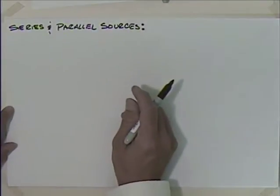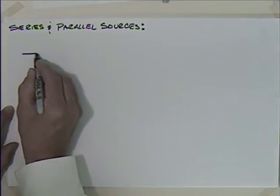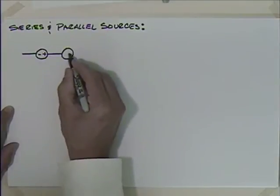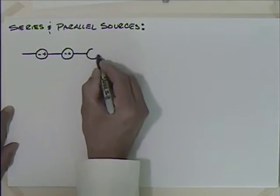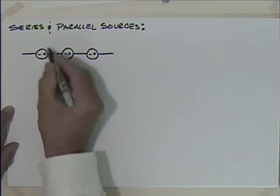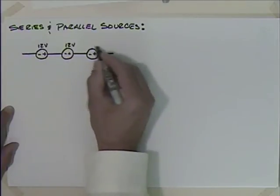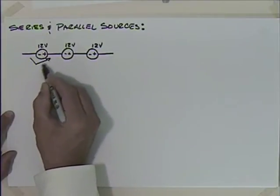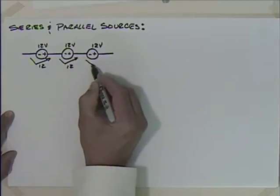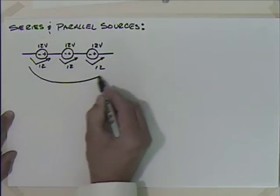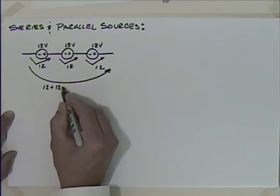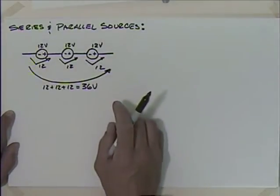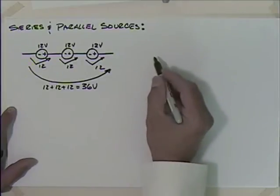Let's talk about sources in series and parallel. If I take some voltage sources and arrange them in series — 12 volts, 12 volts, and 12 volts — the total voltage would be 12 plus 12 plus 12, which is 36 volts. So when you put sources in series, you increase the voltage and you can start to daisy chain them together.